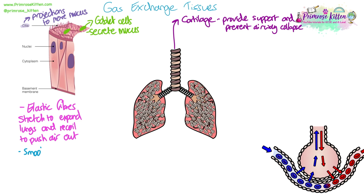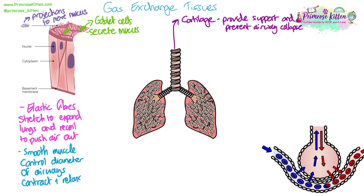Smooth muscle layers allow airways to contract, and this controls the diameter of the airways, which allows control of airflow. When the smooth muscle layers contract the airways are narrowed, and when the smooth muscle layers relax the airways are dilated. This allows an increase in airflow during exercise, for example.